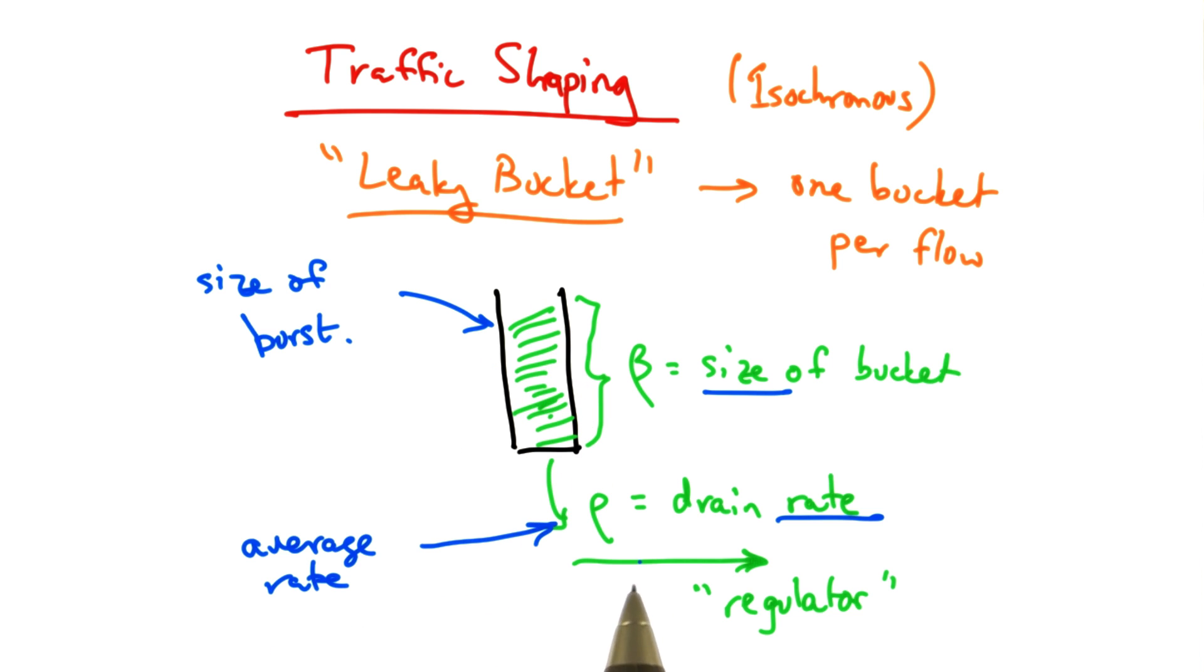The leaky bucket allows flows to periodically burst, and the regulator at the bottom of the leaky bucket ensures that the average rate does not exceed the drain rate of the bucket.